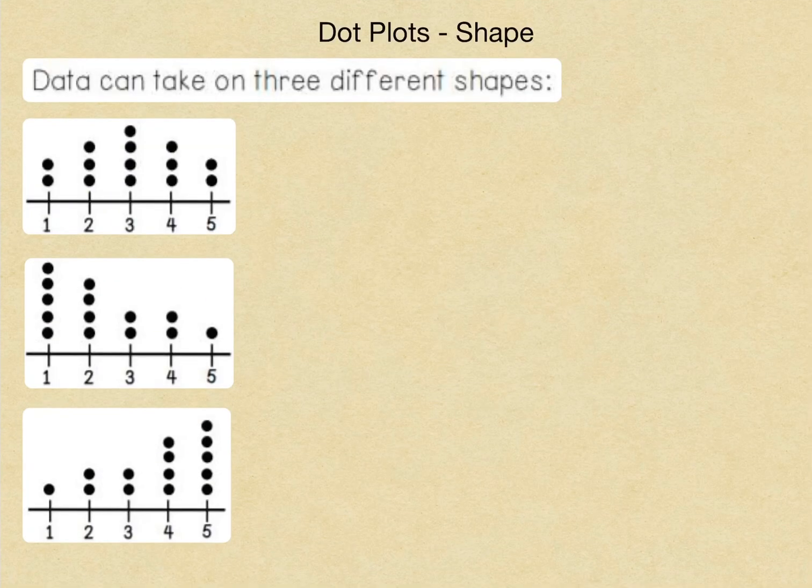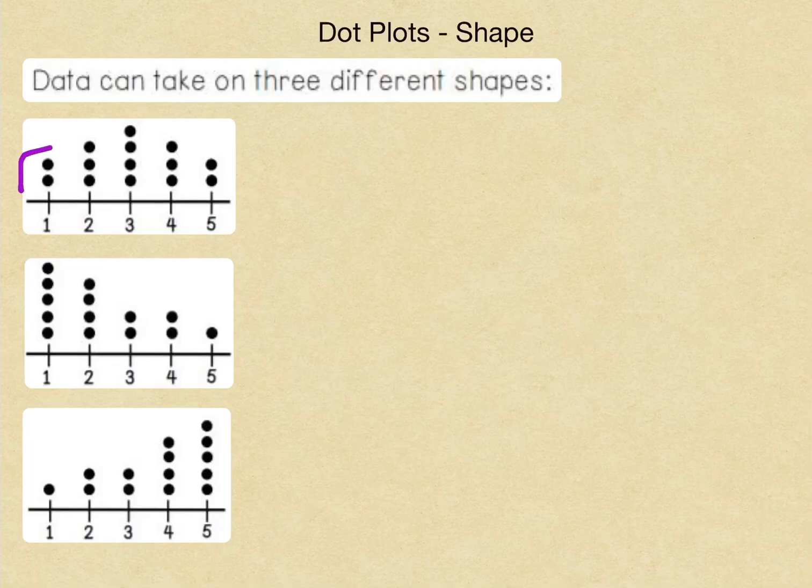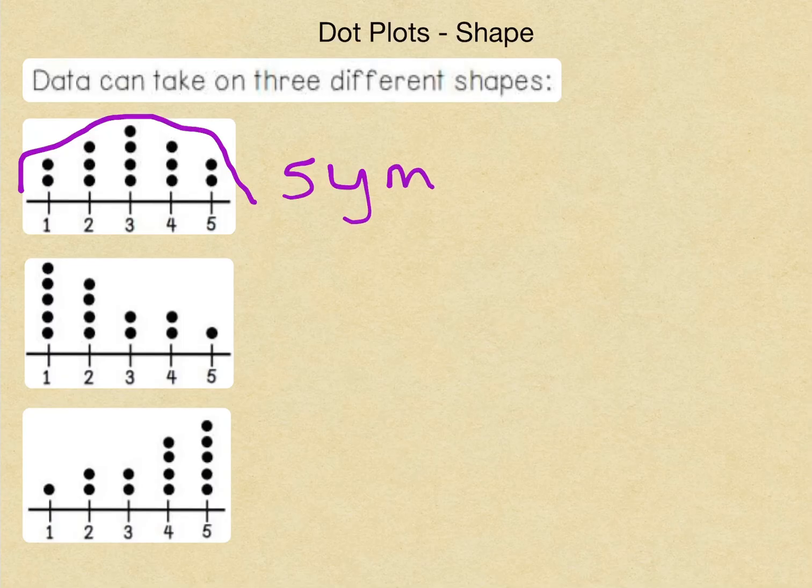We're going to start with the shapes of the data, specifically with the dot plot. Now, there can be three different types of shapes. Now, what can help us sometimes with the shapes is if we actually trace around the points. And what you may notice on this one is that the shape seems about the same on both sides. It's actually, in this example, exactly the same on both sides.